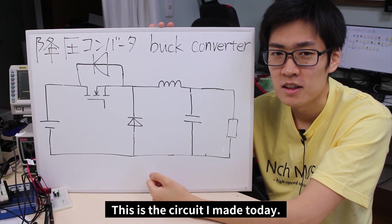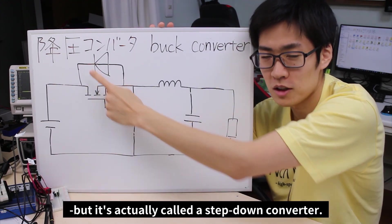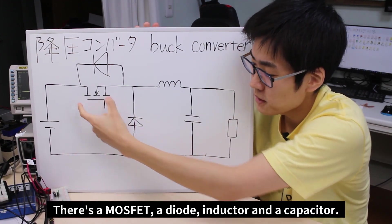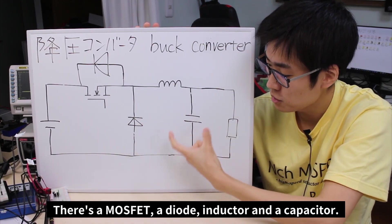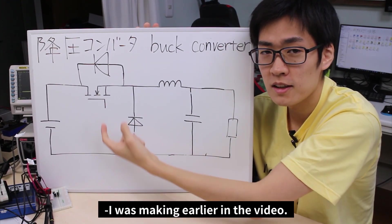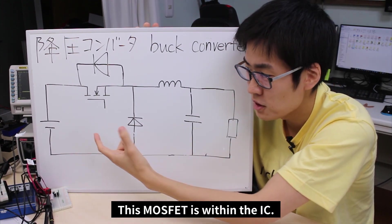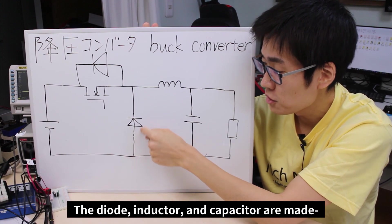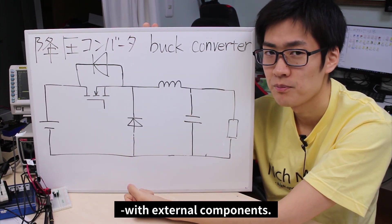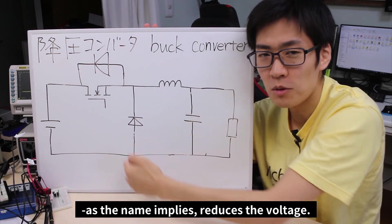This is the circuit we made today. In this video, I've been calling it a switching regulator, but it's actually called a step-down converter — this is a buck converter circuit. It has a MOSFET, a diode, an inductor, and a capacitor. The MOSFET part is the IC I was making earlier in the video; the MOSFET is in the IC. The diode, inductor, and capacitor are made using external components.